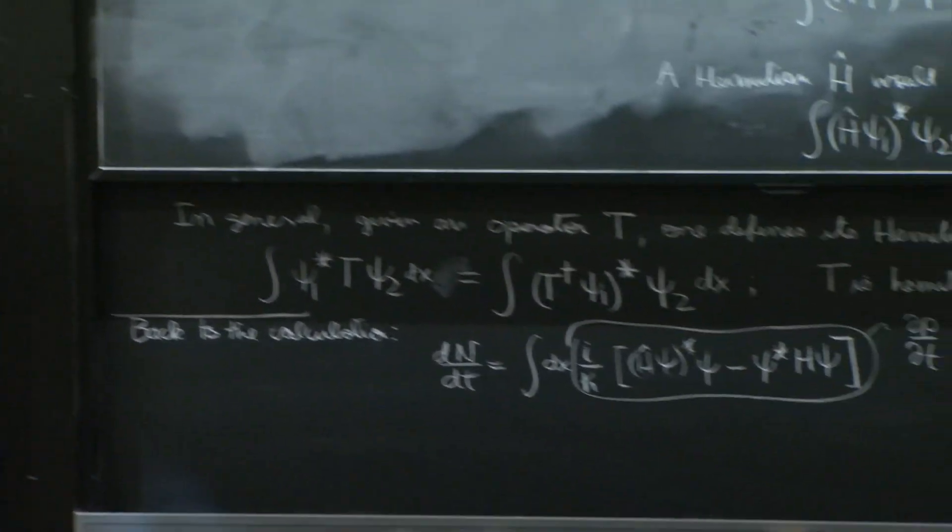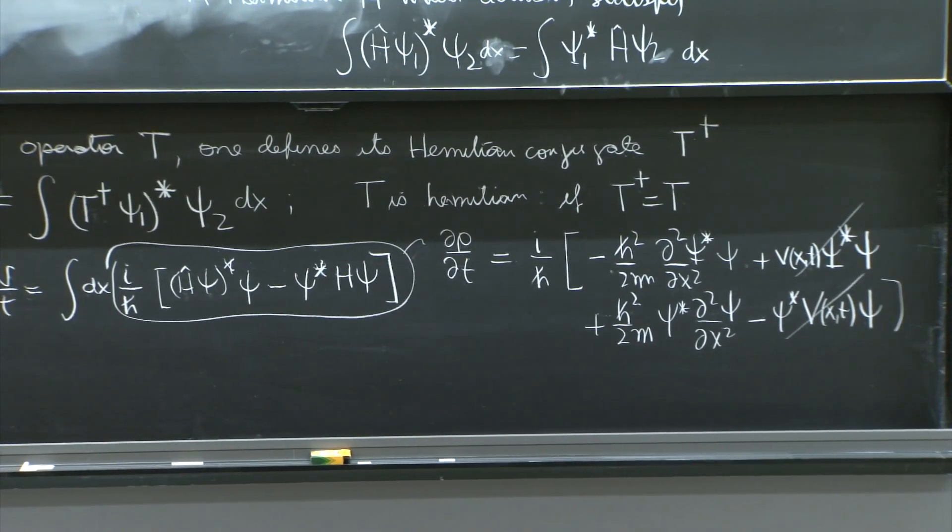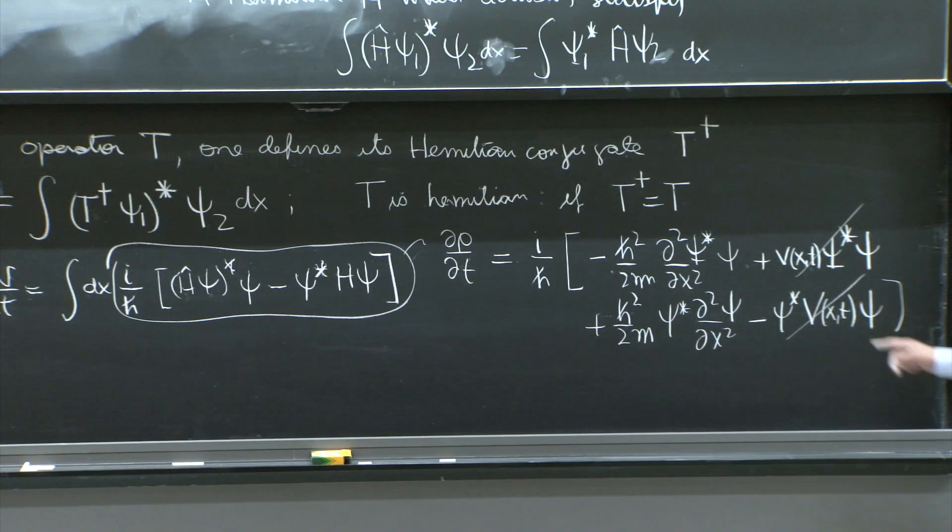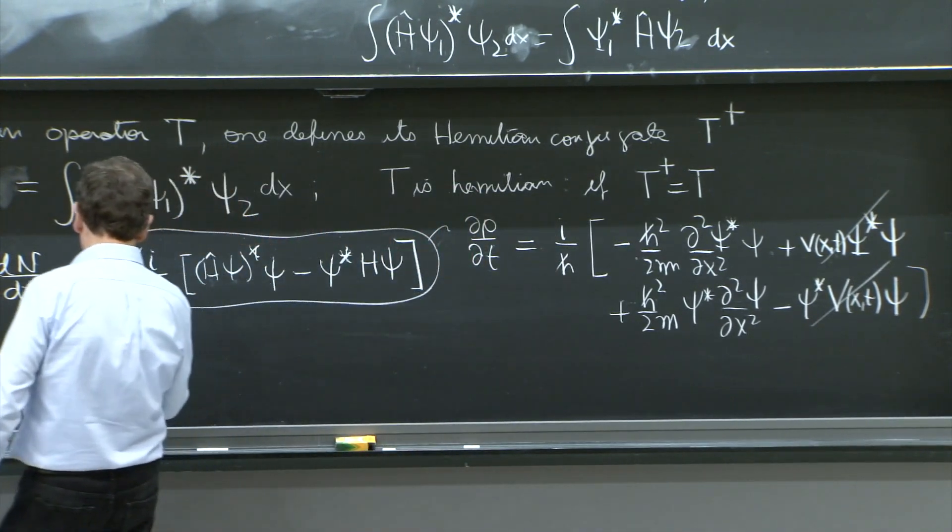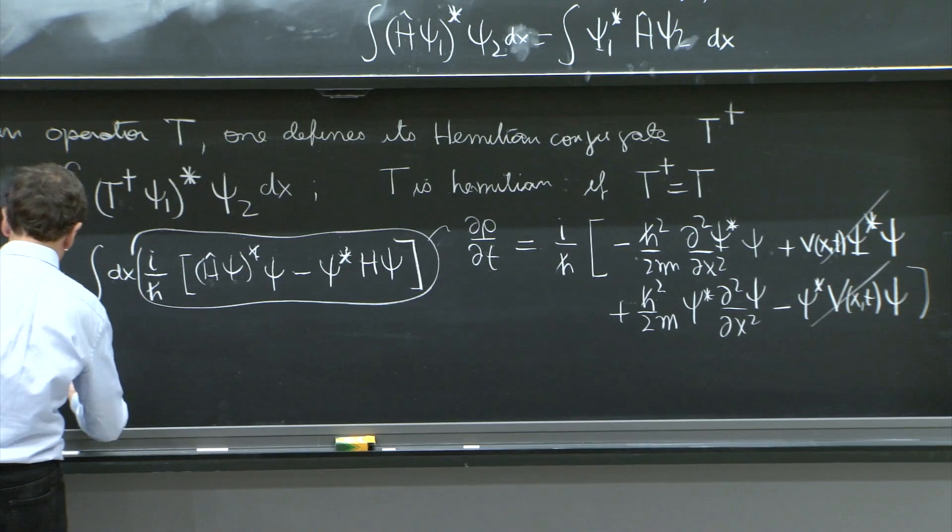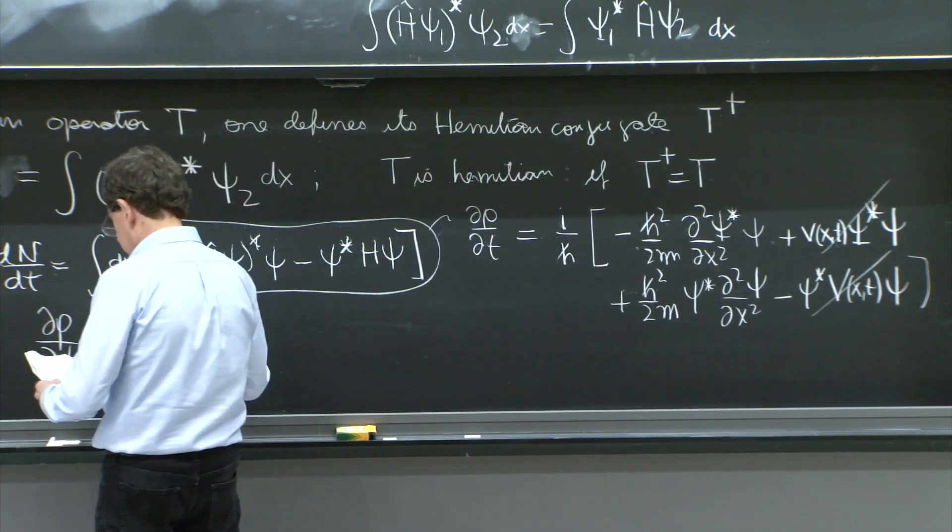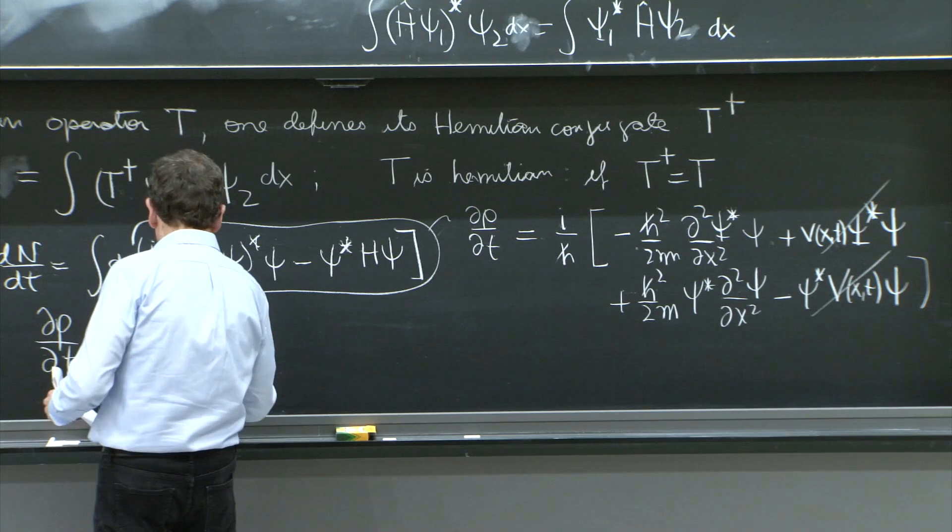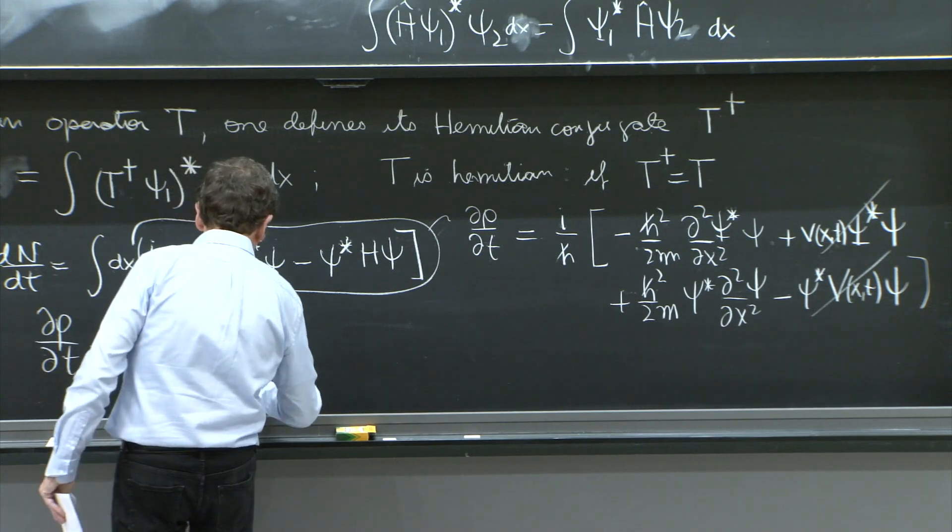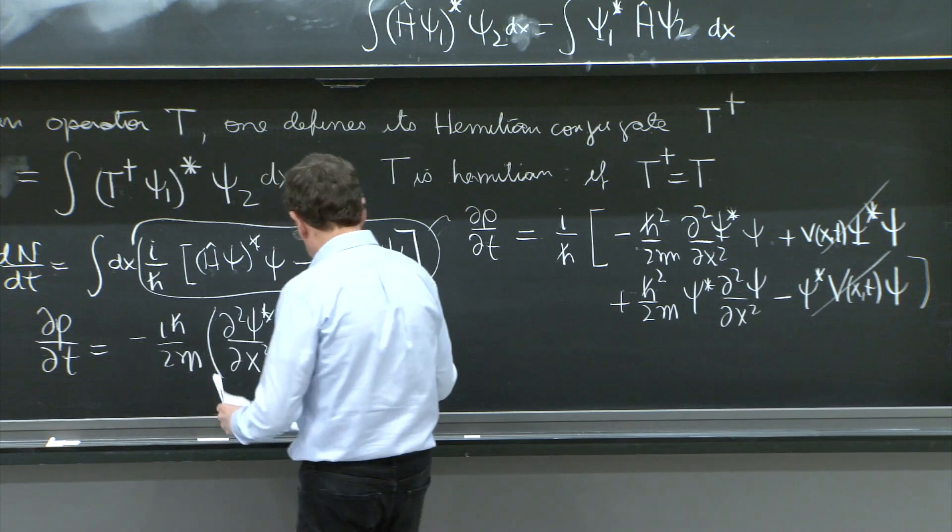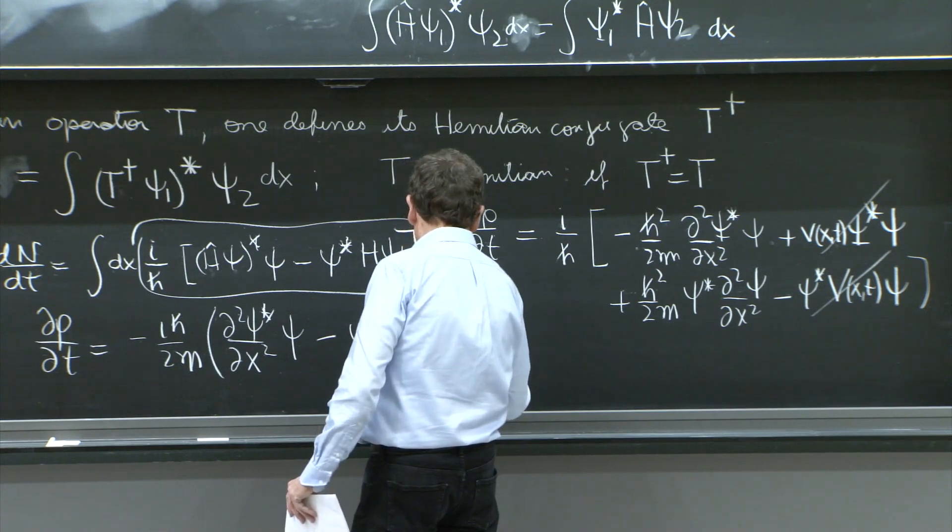This is not so bad. In particular, you see that these two terms cancel. So that's neat. And now, this becomes the following. This d rho/dt has become minus ih bar over 2m d second psi star/dx squared times psi minus psi star d second psi/dx squared.